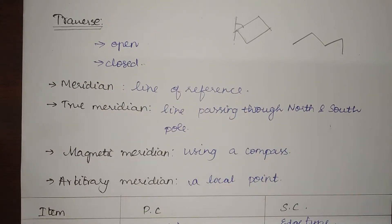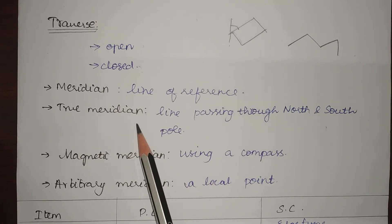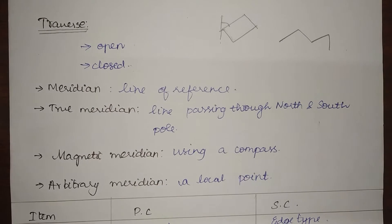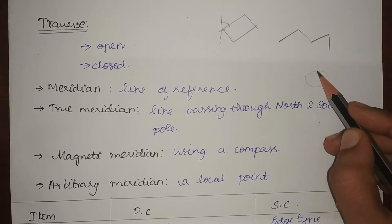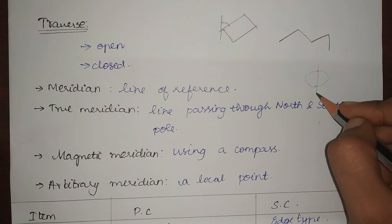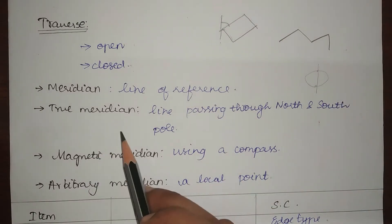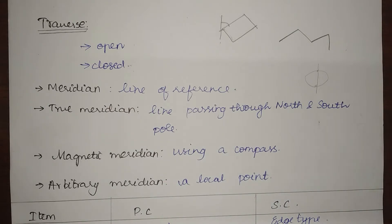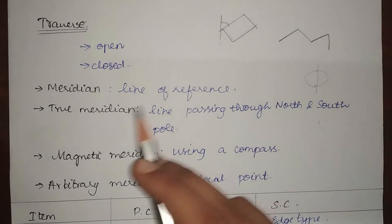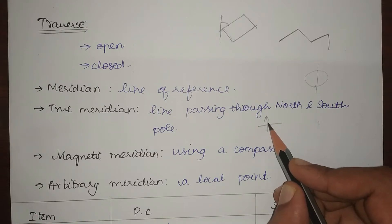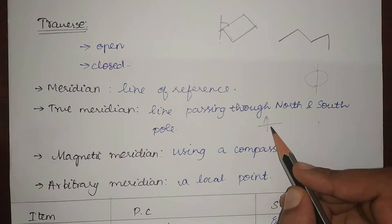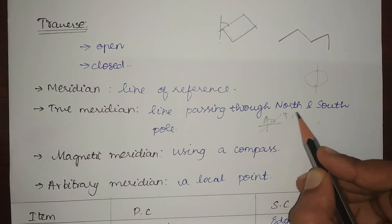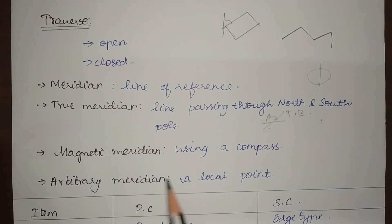The first is the true meridian — the line passing through the north and south poles of the earth. Any horizontal angle taken using this true meridian as the point of reference is called the true bearing.